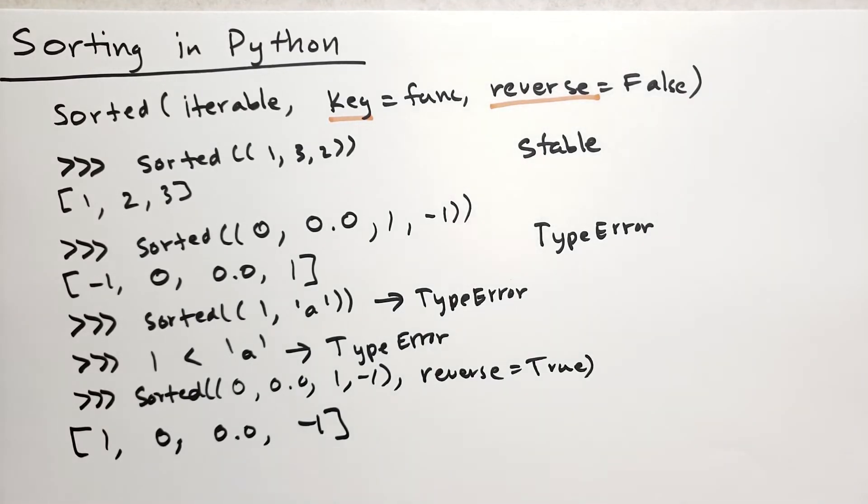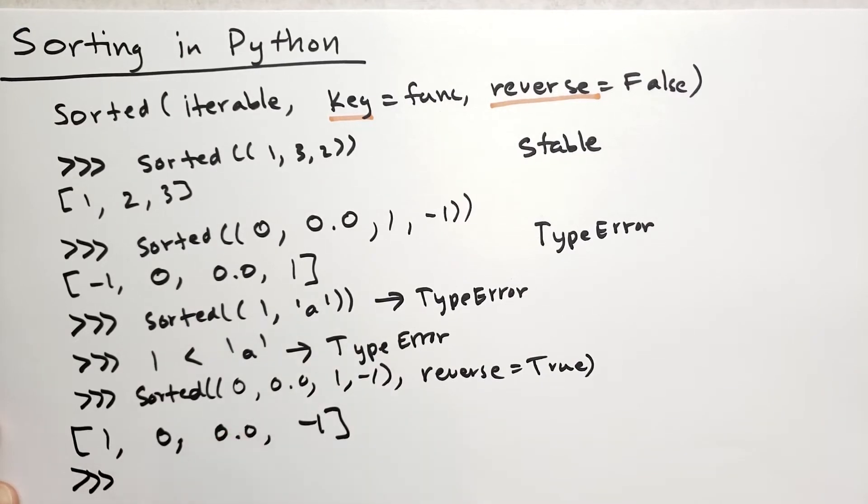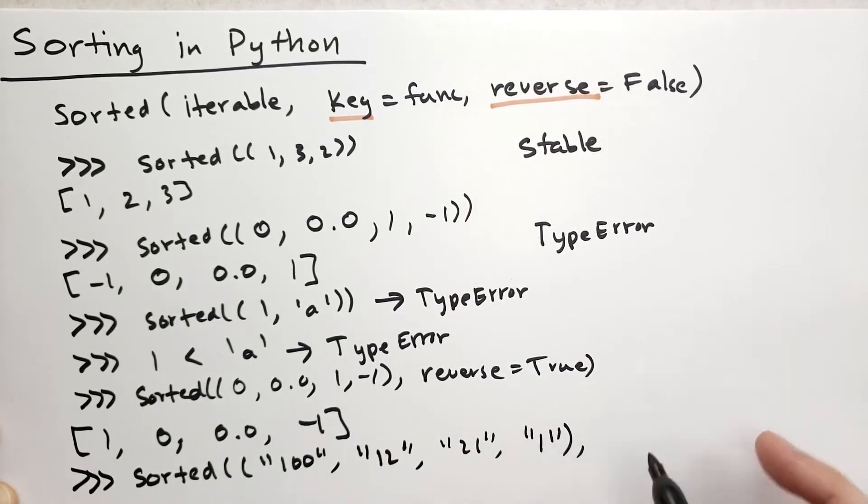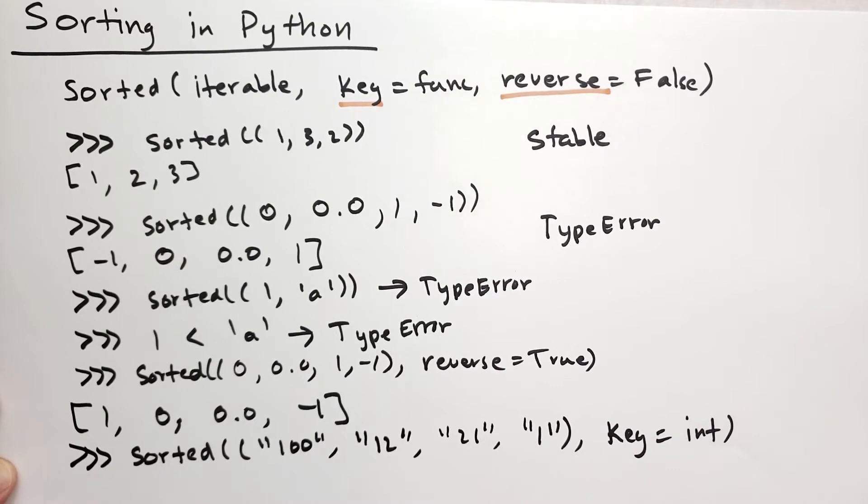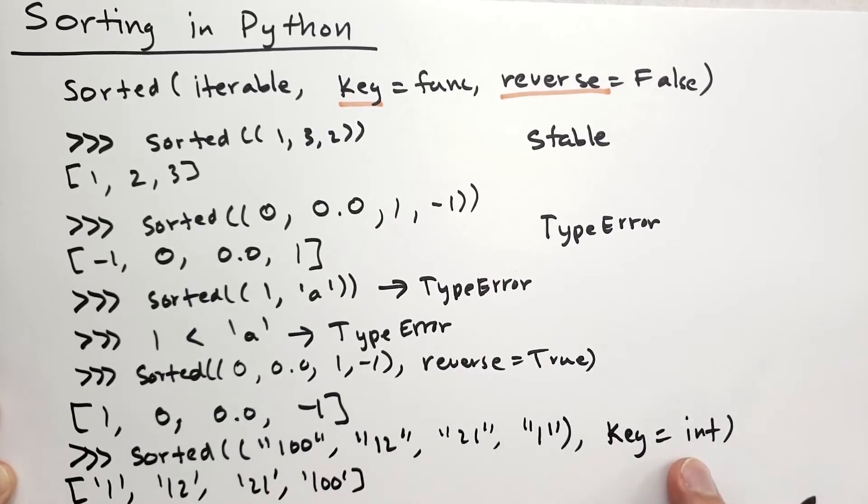Let's say we wanted to sort a list of strings based on their integer value. So we have 100, then 12, then 21, and then finally just lowly number 1. And we're going to say the key function is in fact the int built-in function. What this does is give you back a list of the original items: 1, 12, 21, and finally 100. It takes int, applies them to each of these values, sorts those things, and gives you back the original value.